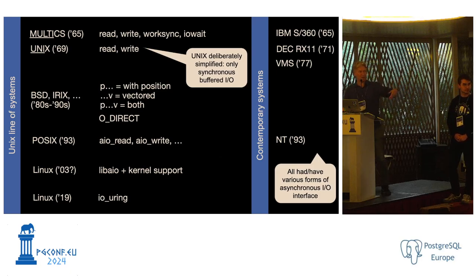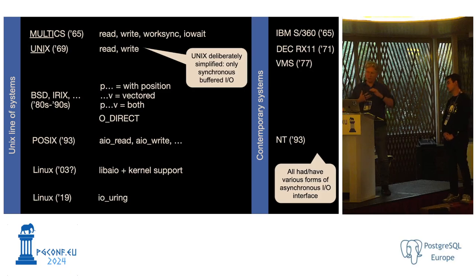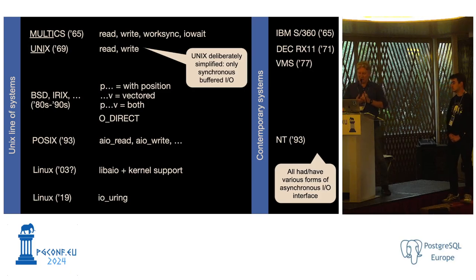Later, other things happened. Five years ago, IO Uring came out on Linux, which has made a really big impact on the industry. There's all kinds of really cool stuff you can do with it, and that's one of the three things we're talking about in this talk.